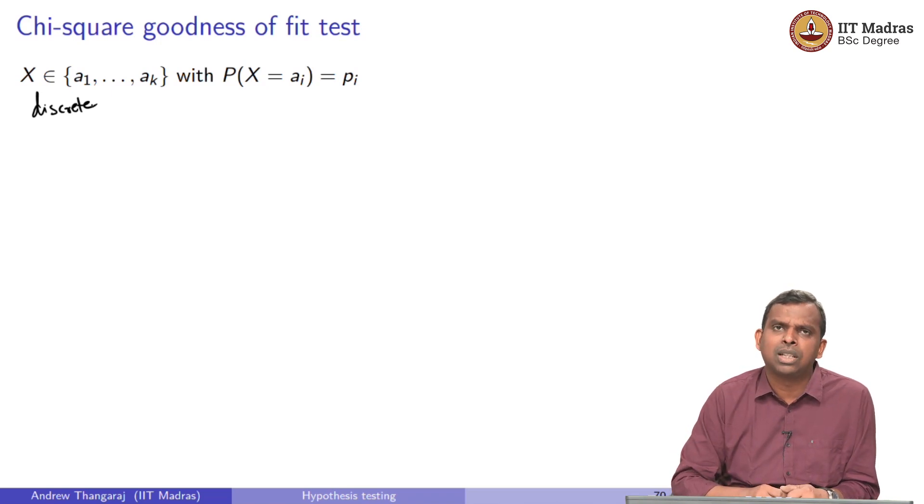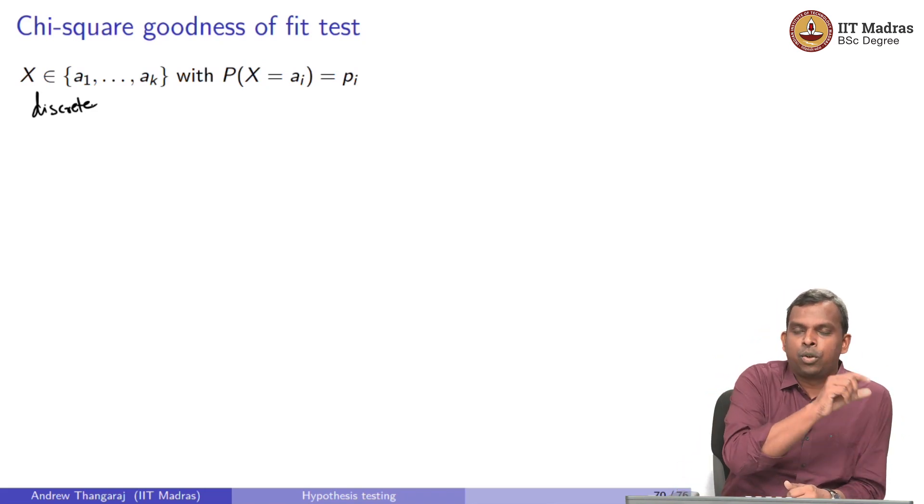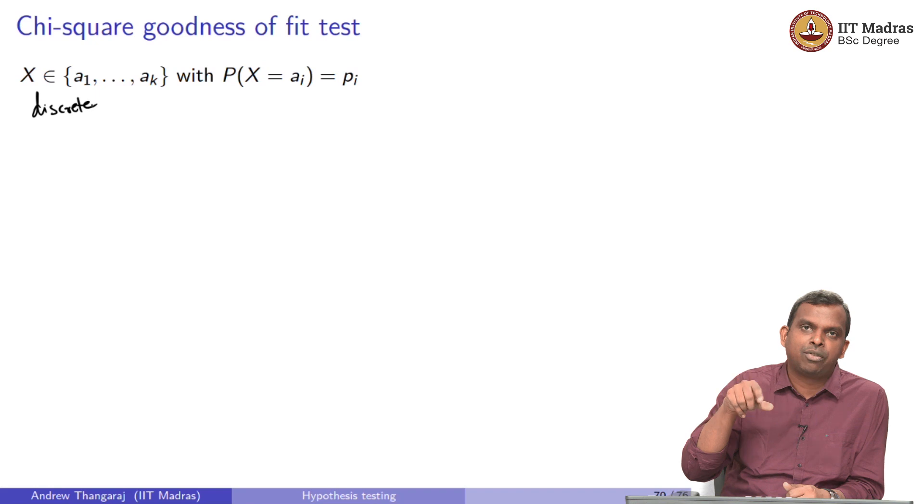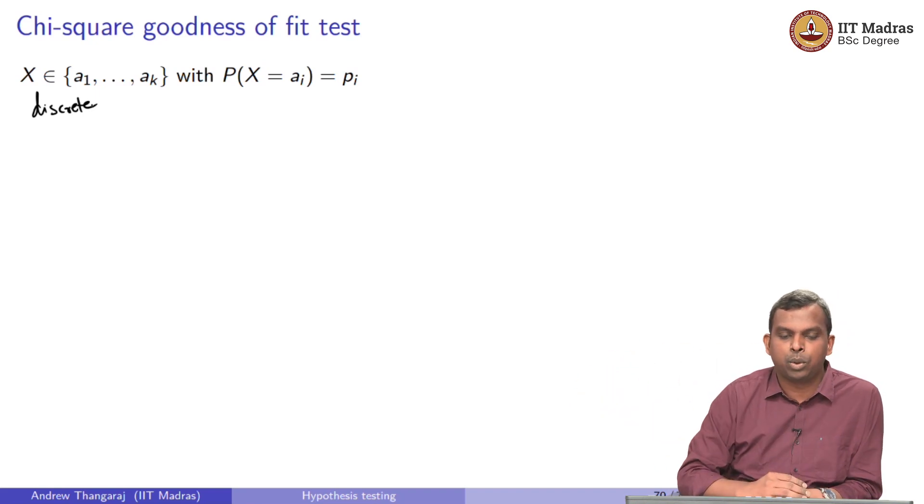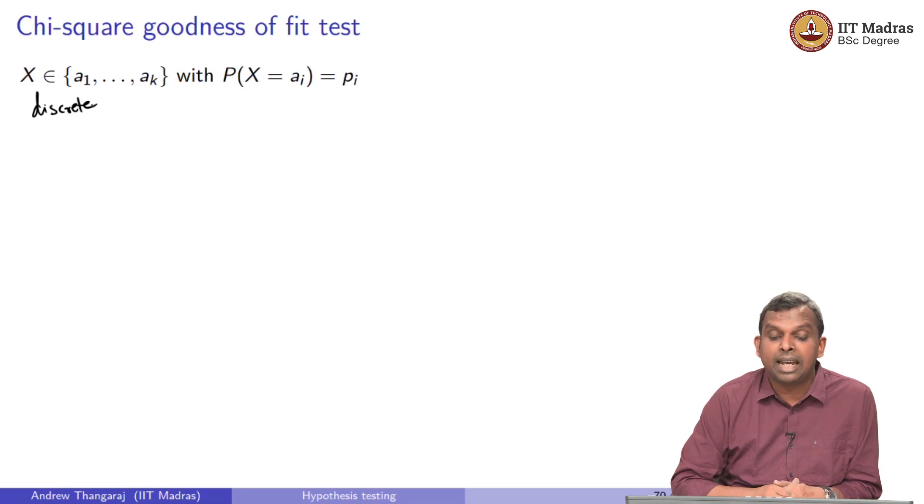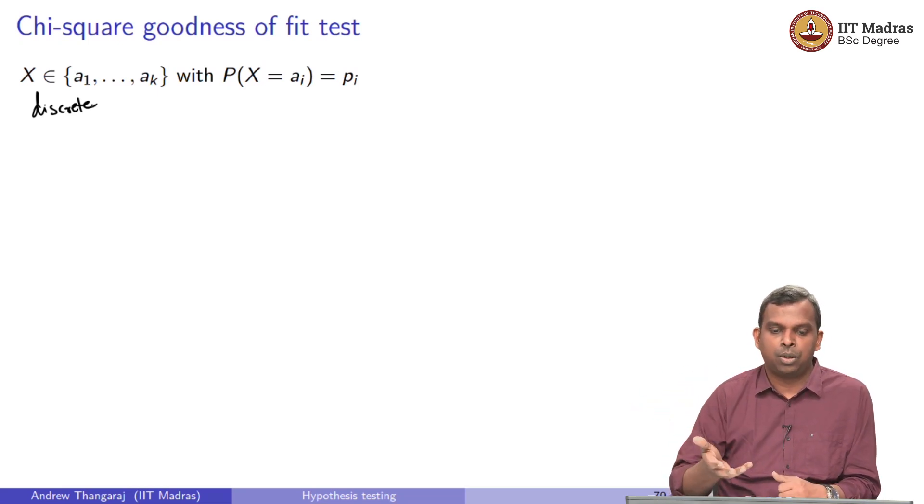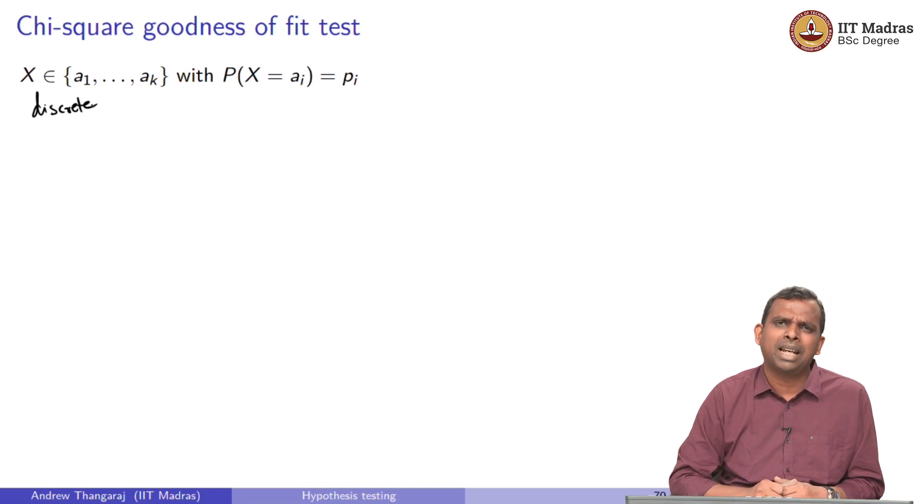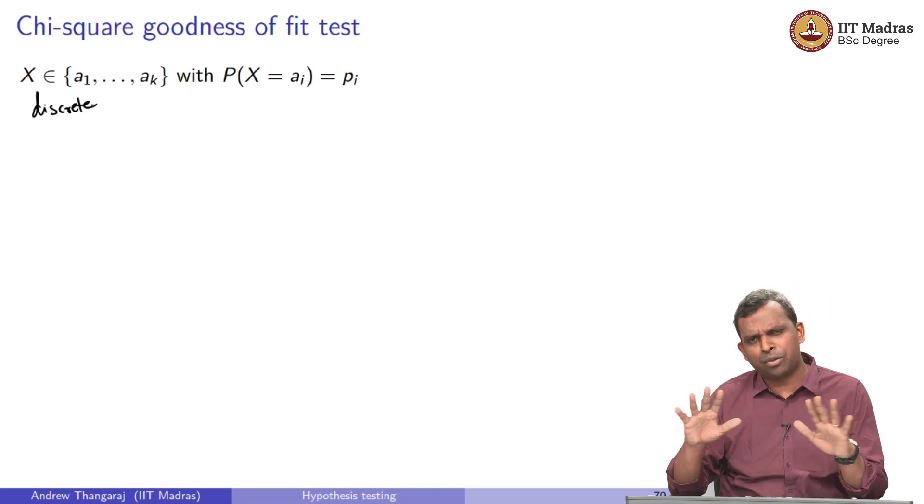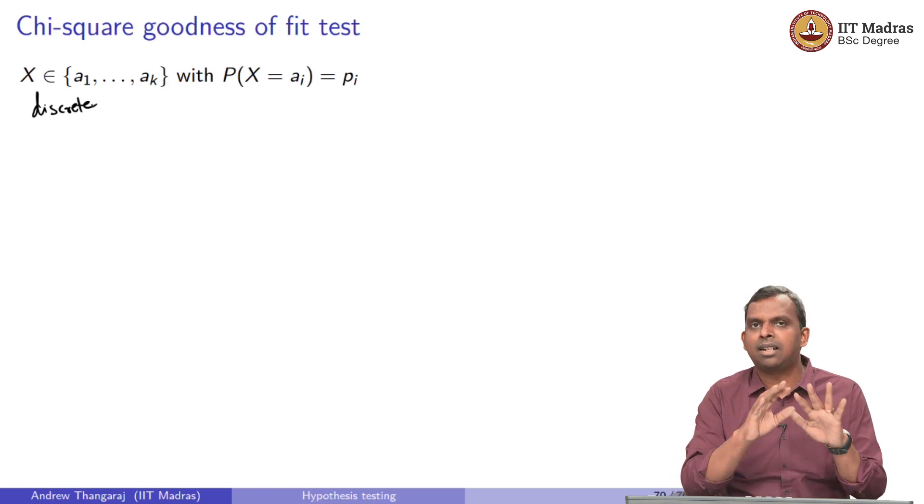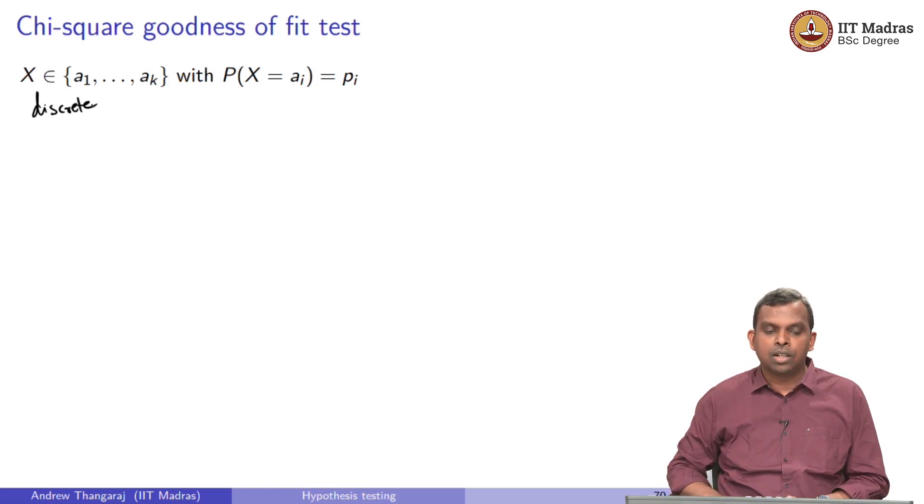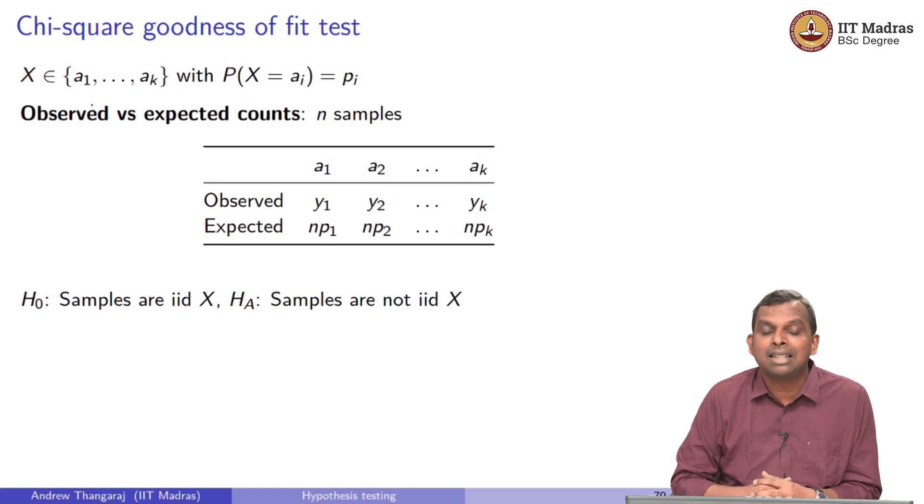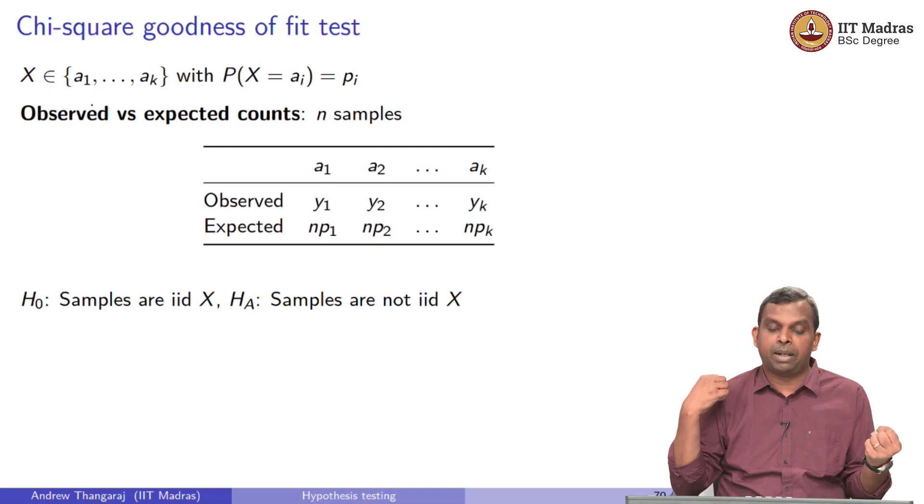We will see how to deal with continuous a little bit later. But this is a discrete random variable. It takes k values a1 through ak. I am calling it a1 through ak just to keep it general. In the previous case, if we are looking at grades, it took seven different values, S, A, B, C, like that, a1 through ak. Probability that X equals ai is pi. This is again a general distribution. In the previous case, we had some specific values for probability. In this case, we have a general situation. It may be that pi is parameterized and you have to find pi from data. But in general, we start with this point. This is the starting point for goodness of fit test.